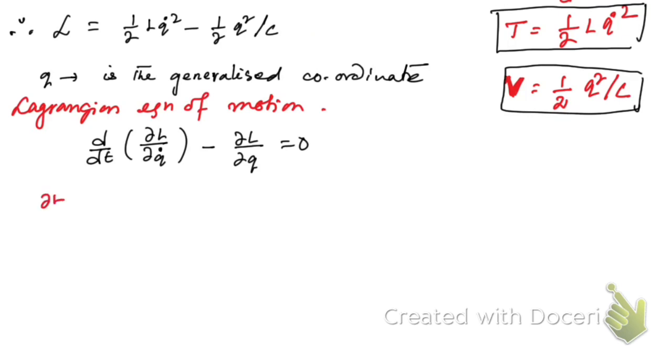From this expression, if we differentiate L partially with respect to Q̇, this term doesn't contain Q̇, so its derivative is zero. The partial derivative of the other term equals (1/2)L·2Q̇, so the 2s cancel and we get ∂L/∂Q̇ = LQ̇.